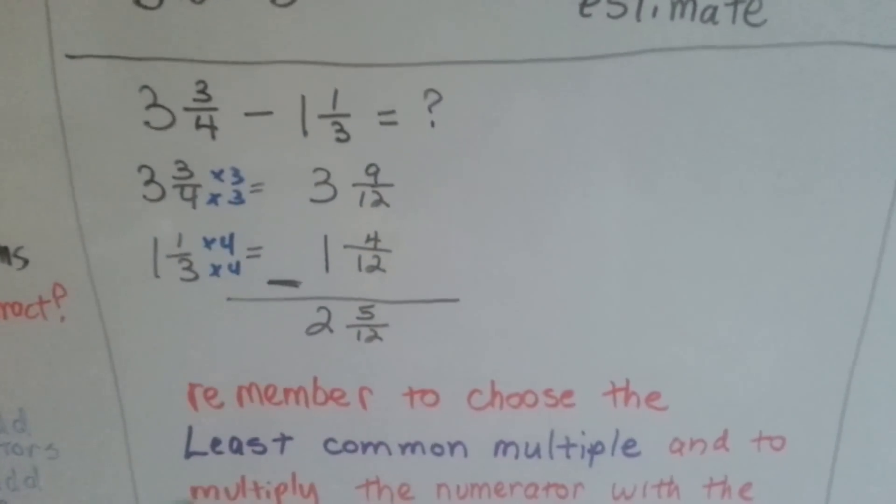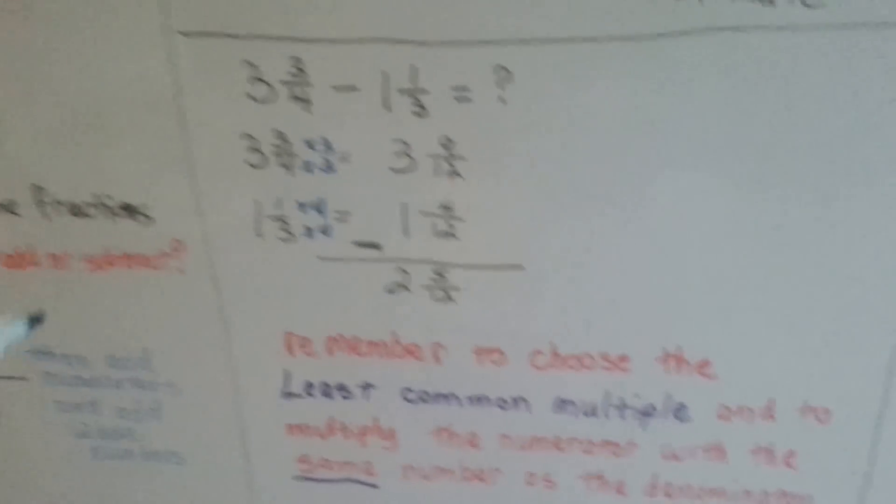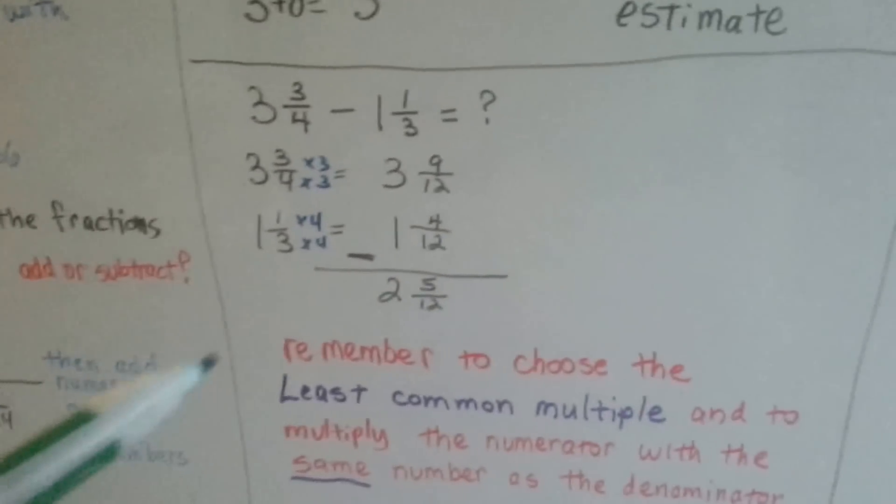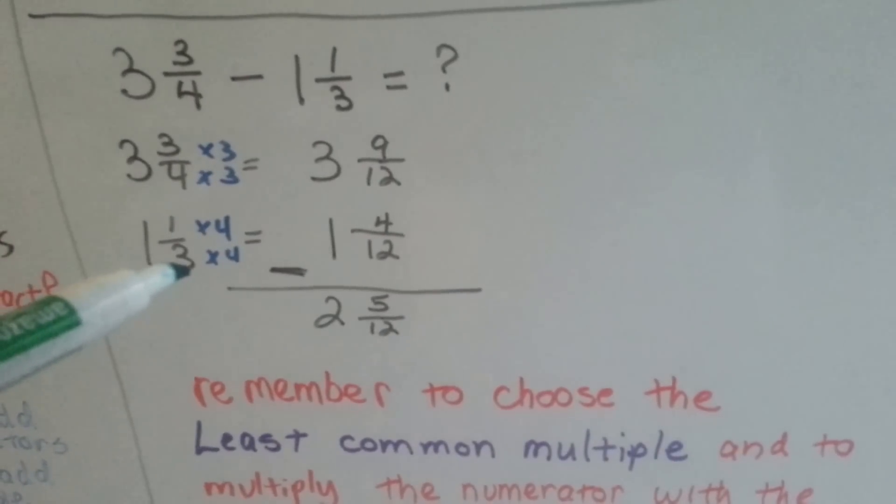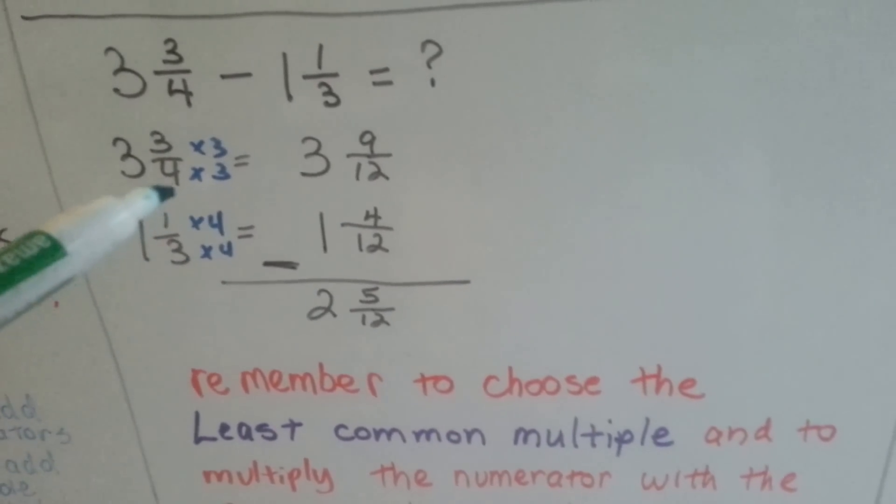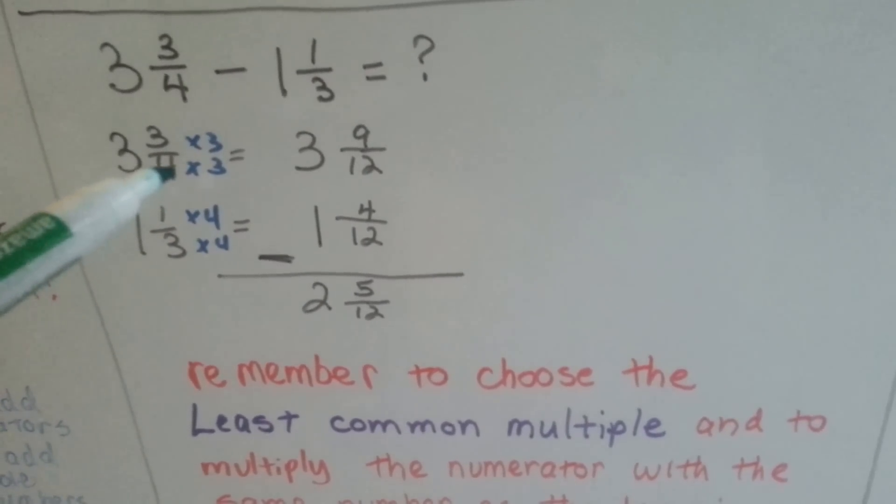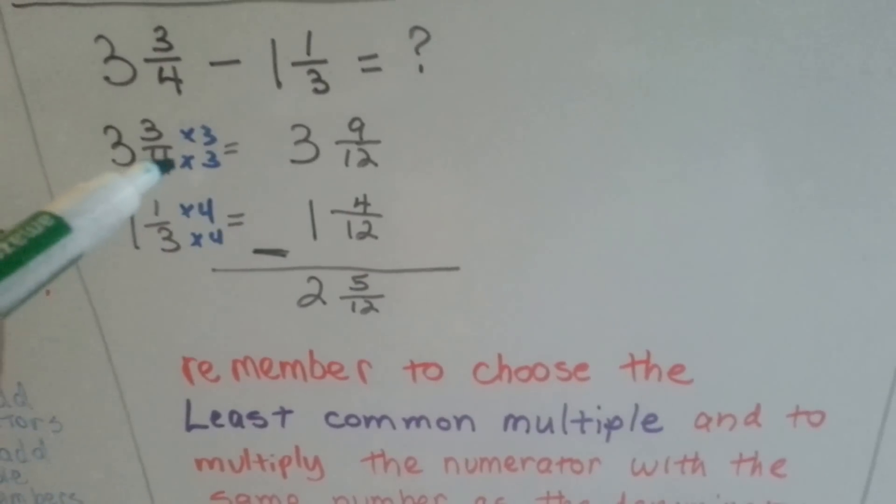If we have to subtract, we do the same thing that we did with the addition one. We find multiples that 4 and 3 can meet at. They can meet at 12 and ask, what does 4 need to become 12? It needs to be multiplied by 3.